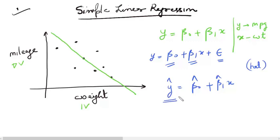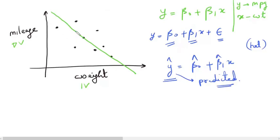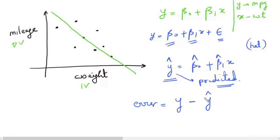When we plug β̂₀ and β̂₁ into the equation, what we get is the predicted value, which we represent as ŷ. So ŷ represents the predicted value. The line does make some error when we assume the relationship between these two variables to be linear, and our error is defined as the actual value (y) minus the predicted value (ŷ).